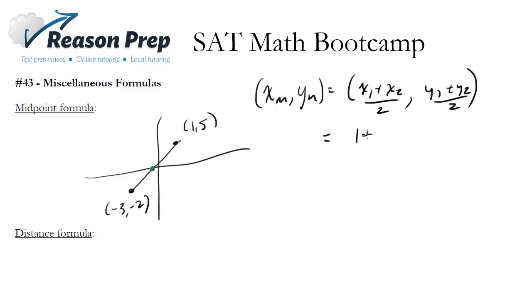So in this case we'd have (1 plus negative 3) over 2, and (5 plus negative 2) over 2, which would become... this would become negative 2 over 2 is negative 1, and then this is 3 halves. So that would be the midpoint.